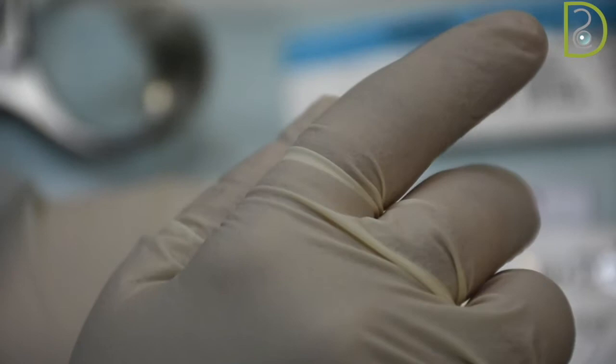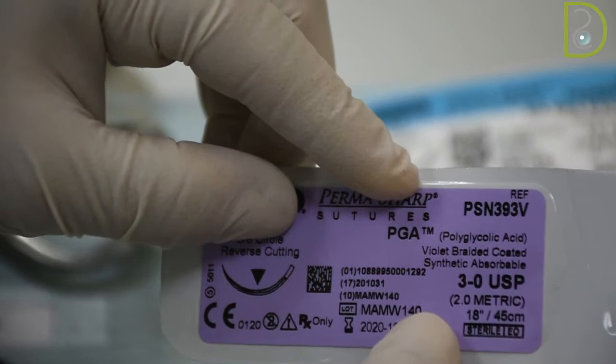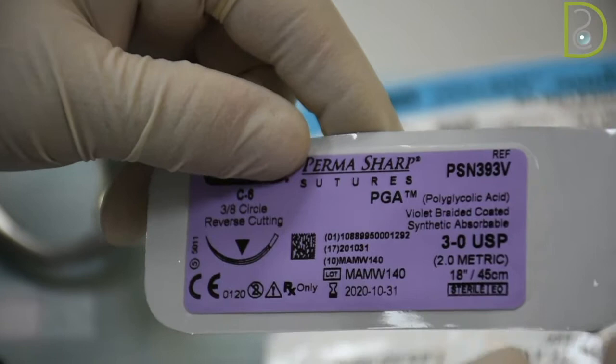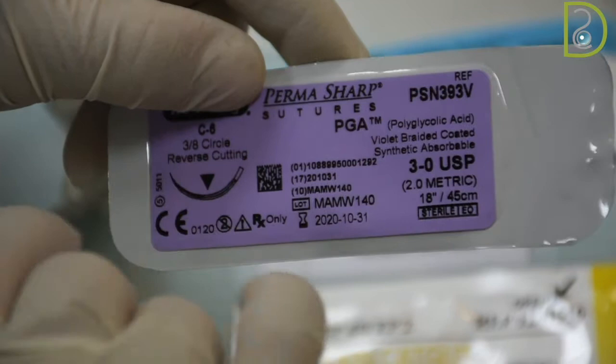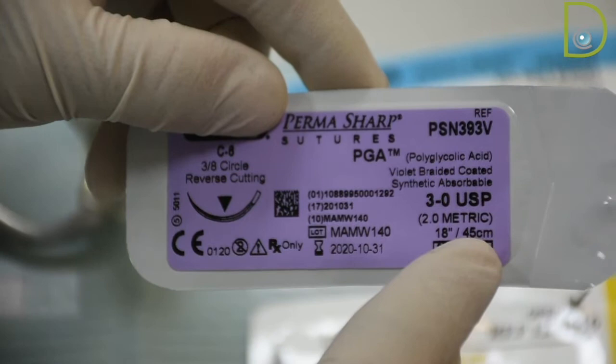Over here, we have the vicryl or the polyglycolic acid, which is a synthetic absorbable suture. And this also again is a 3/8 of a circle, reverse cutting. This is the information of the needle. And this is a 45 centimeter suture length.